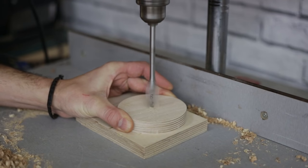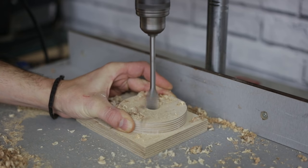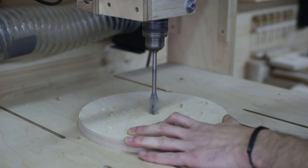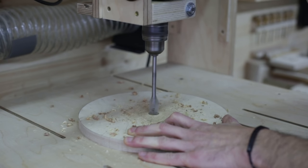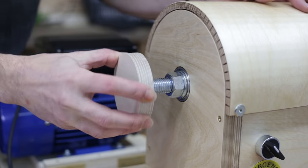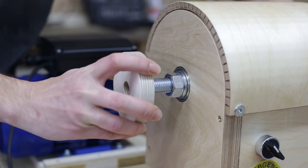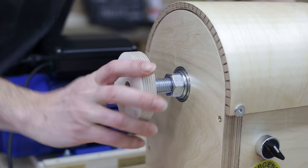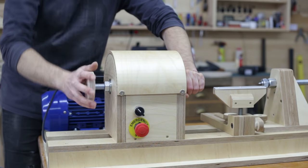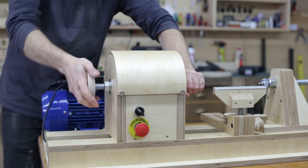I use a bit 1mm less wide than the threaded rod when drilling. By rotating the wooden disc when inserting it, I'll create a thread on the plywood itself, allowing me to remove the disc when necessary.